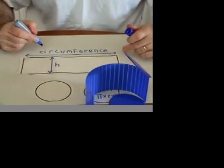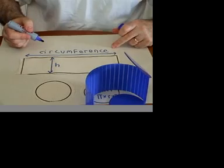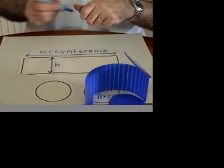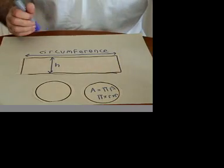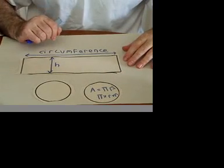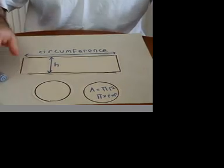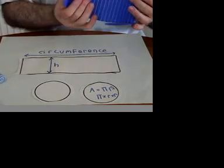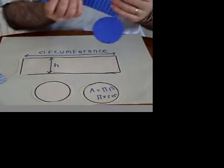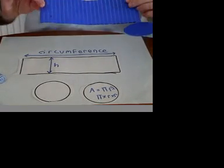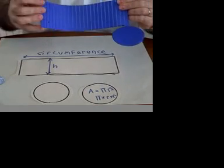So the area of the shape is the perimeter times the height. Perimeter times the height. So the area of the cylinder is the area of the two ends plus the area of this rectangle, which is the perimeter times the height.